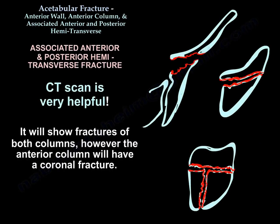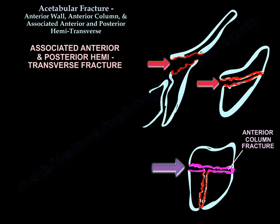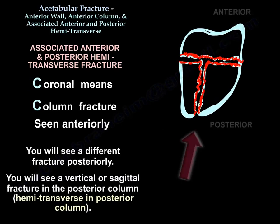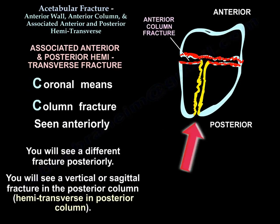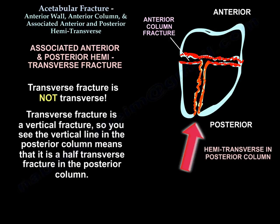CT scan is very helpful in the associated anterior and posterior hemitransverse fracture. It will show fractures of both columns; however, the anterior column will have a coronal fracture — coronal meaning a column fracture — seen anteriorly. Posteriorly, you will see a different fracture: a vertical or sagittal fracture in the posterior column, which is the hemitransverse component. The transverse fracture is actually a vertical fracture, so the vertical line in the posterior column represents a half-transverse fracture in the posterior column.